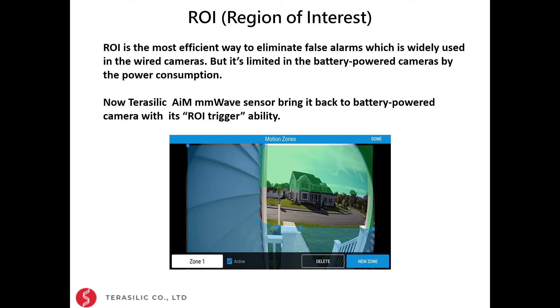ROI, region of interest, is the most efficient way to eliminate false alarms which is widely used in wired cameras. However, its power consumption is too high for regular battery-powered cameras.